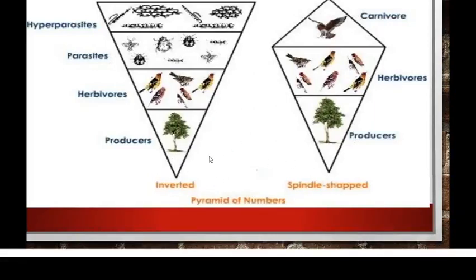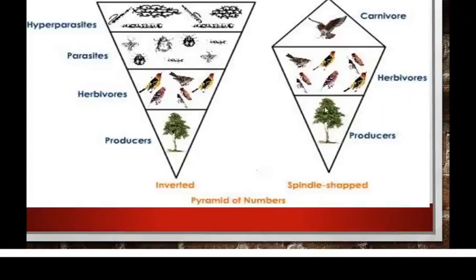There are different types of pyramids based on numbers — one is the upright type and the other is the inverted type. In the inverted pyramid, you have few herbivores, few parasites, and few hyperparasites. Here, herbivores are dependent on a single tree or single plant, and then there is the carnivore. These represent different numbers of trophic levels based on the area considered.